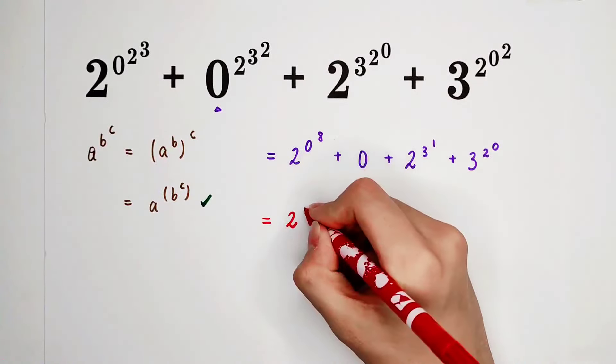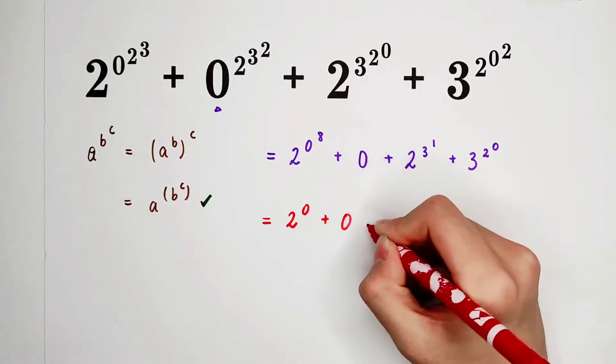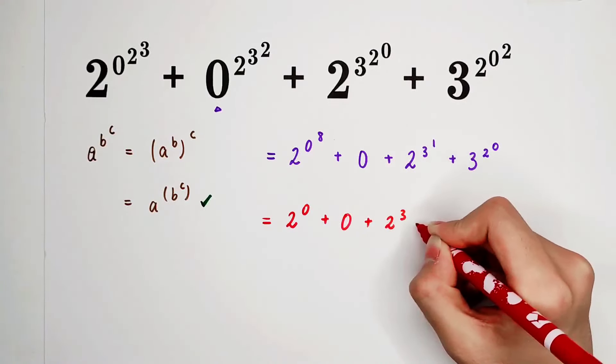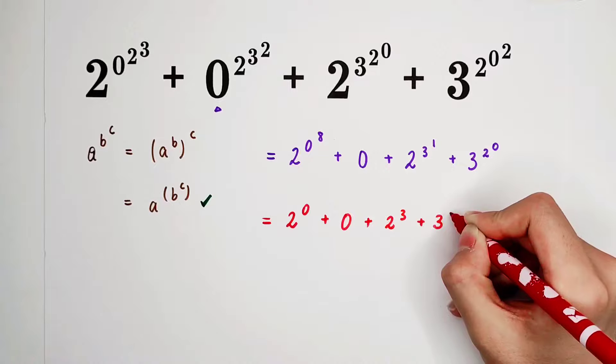This is 3 to the power of 2 to the power of 0 to the power of 2 is 0. Now, 2 to the power of 0 plus 0 plus 2 to the power of 3 plus 3 to the power of 1.